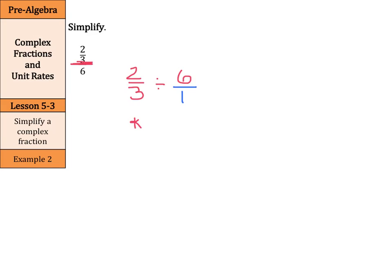So when we keep, change, flip this, we have two-thirds times one-sixth. Now, we can cross-simplify here. We can divide the six by two and the two by two. Remember, when you simplify fractions, you can simplify before you multiply or after you multiply. And most of the time, it's easier to simplify before you multiply. You're now left with one times one is one. Three times three is nine. So two-thirds over six is one-ninth.